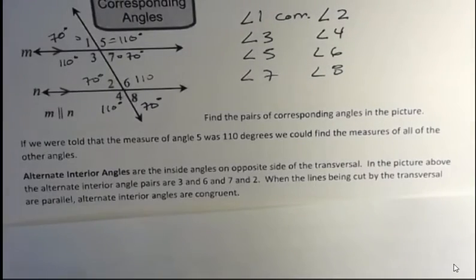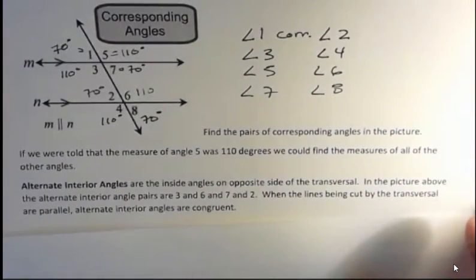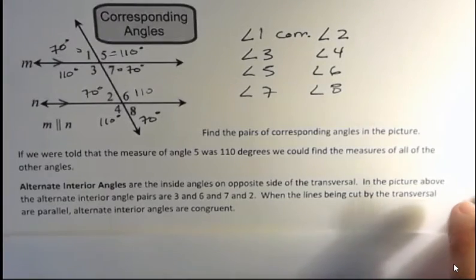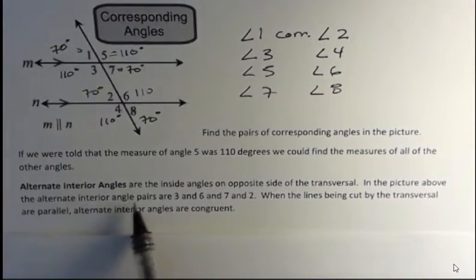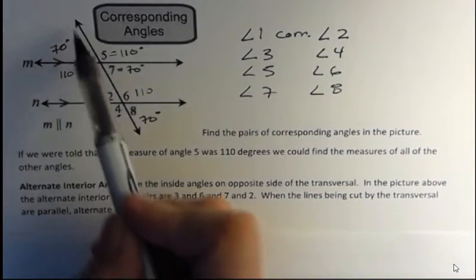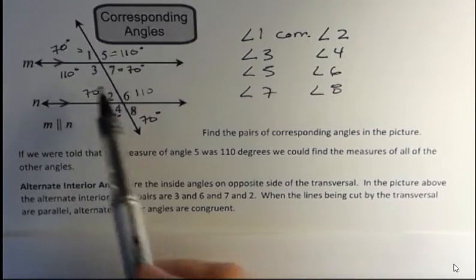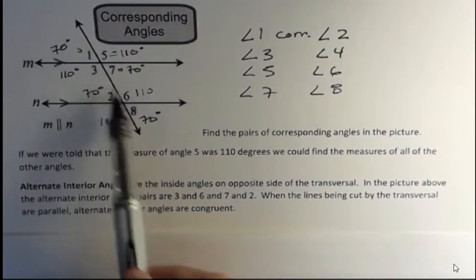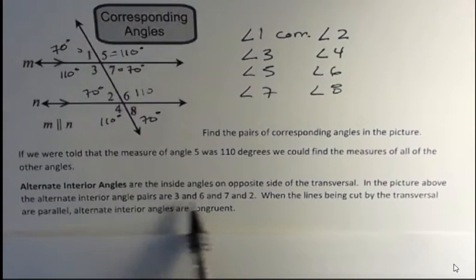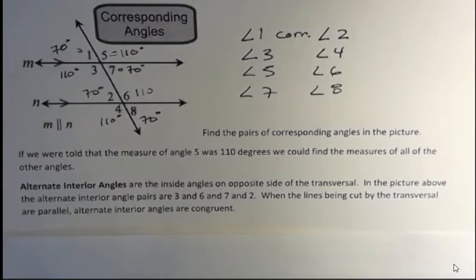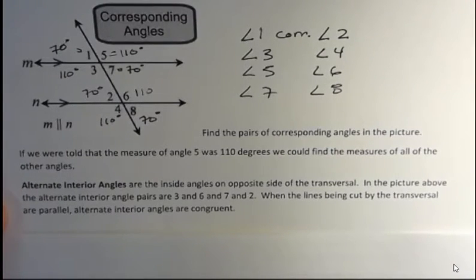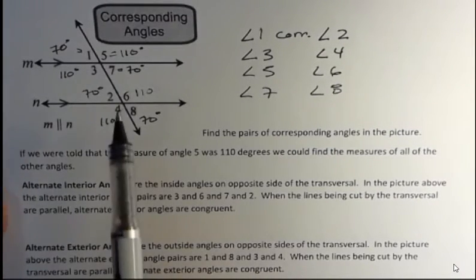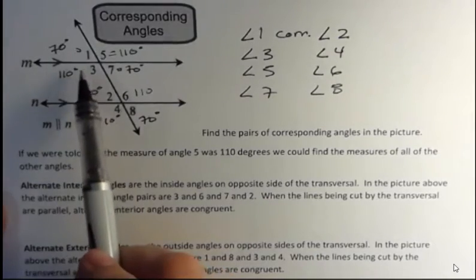Alternate interior angles are the inside angles on opposite sides of the transversal. Here's the transversal, and the angles are on opposite sides of it but inside the two lines. So three and six are alternate interior angles, and also seven and two — those are alternate interior angles. They're in the interior of the picture but on opposite sides of the transversal, and they are congruent whenever you have parallel lines. You can see that's true: 70 and 70, 110 and 110.